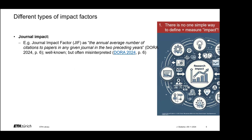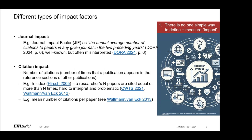Let's have a closer look at different types of impact factors that can help operationalize research impact. First, and well-known, is journal impact. Journal impact factors are basically the annual average number of citations to papers in any given journal in the two preceding years. This is a fairly well-known indicator, but it is also often misinterpreted — we'll have a closer look at this later on.